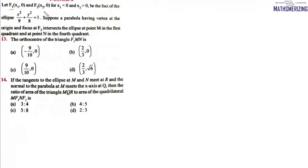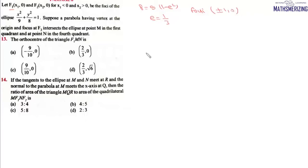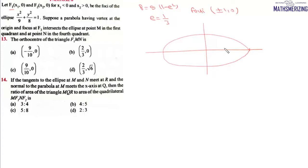The question asks: let F1 and F2 be the foci of the ellipse x²/9 + y²/8 = 1. We find its eccentricity using b² = a²(1 - e²), giving e = 1/3. So the foci of this ellipse are at (±ae, 0), which works out to (±1, 0). We have this ellipse with foci at (1, 0) and (-1, 0).